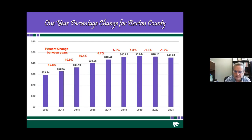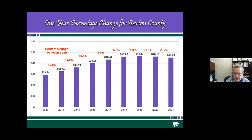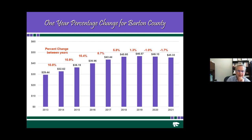Looking at this from 2013 all the way to 2021, in Barton County the LNI went from $29.44 up to $46.57, and then dropped off. Early on, as those high-profitable years took more effect, the percentage change from year to year was pretty high — approaching 11% from 2014 to 2015. Since then, with no other peak years, the values have been leveling. The last year of increase in Barton County was 2018 to 2019 at 1.3%. From 2019 to 2020 it was negative one, and from 2020 to 2021 negative 1.7%.